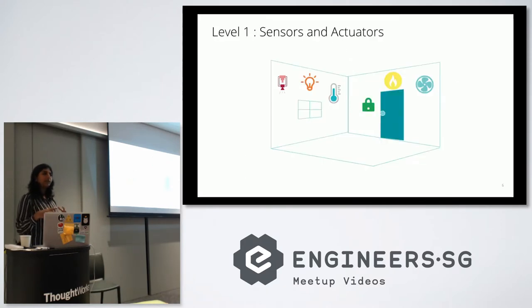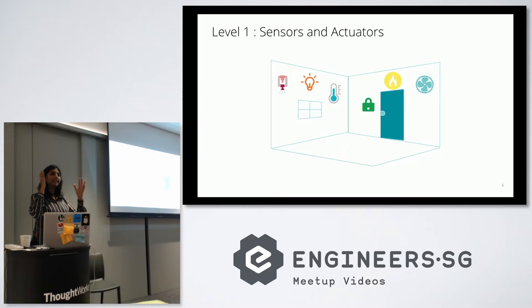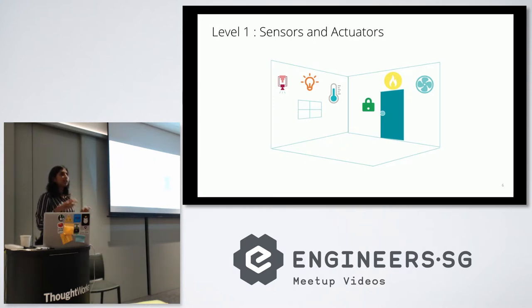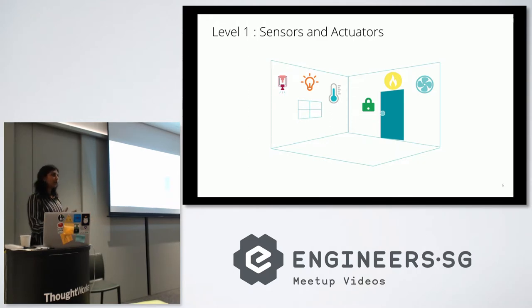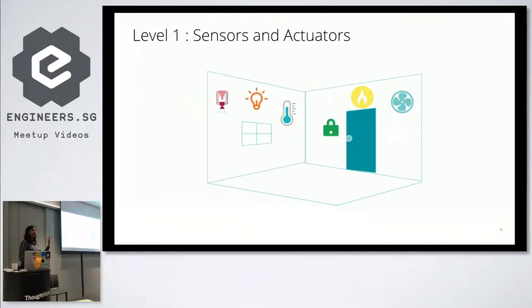We're going to dive deep and see what the different parts of this application are. There are actually six levels. The first part is called sensors and actuators — these are edge devices in the physical space. If it's a car, it could be sensors in the car. If it's a room, it could be a contact sensor, a light sensor, or a temperature sensor.